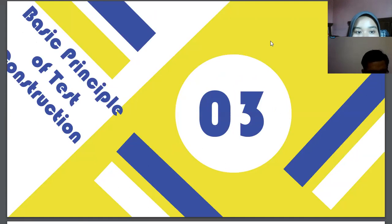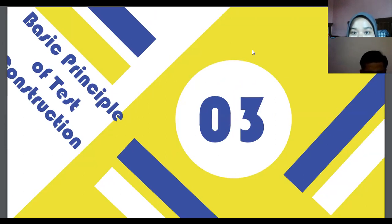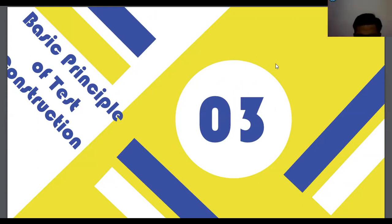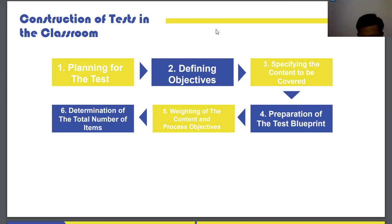Next, the basic principles of test construction will be explained. There are six steps in the construction of a test. The first step is planning the test. There are some questions that should be resolved: What is the intended function of the test? What are the specific objectives of the content area you are trying to achieve? What content area has been covered? And what type of test will be most suitable to achieve the intended objective of that content?